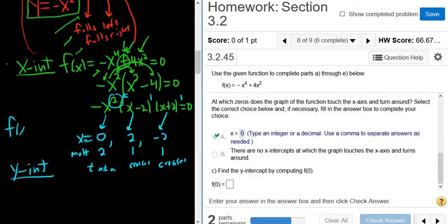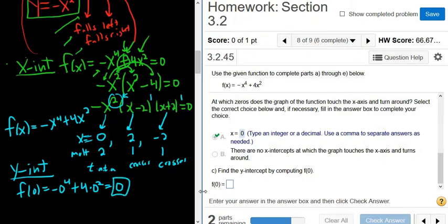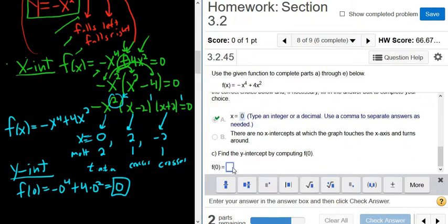So I'm going to write down our function again. f of x is equal to negative x to the 4th plus 4x squared. So to find the y-intercept, we plug in 0 for all the x's. So we get negative 0 to the 4th plus 4 times 0 squared. So we just get 0. So it's just 0. So that's the y-intercept. So 0, 0. Here, it just wants 0. f of 0 equals 0. Beautiful.